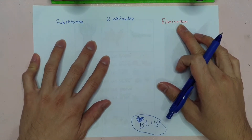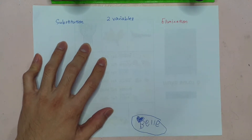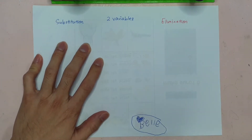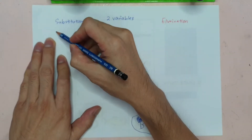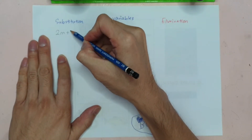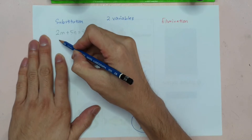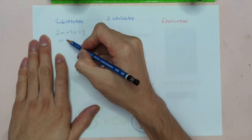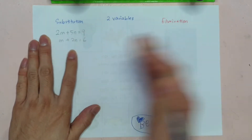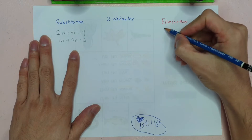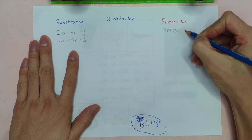I'm going to write 1 question where I will use 2 different methods to solve it. The question is: 2M plus 5N equals to 9, and M plus 2N equals to 6. I'm going to write it on both sides.